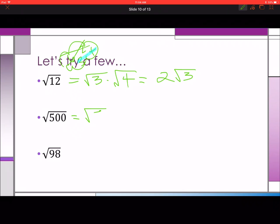This is square root of 5 times the square root of 100. The square root of 100 is 10. This one becomes the square root of 49 times the square root of 2, which is 7 times the square root of 2.